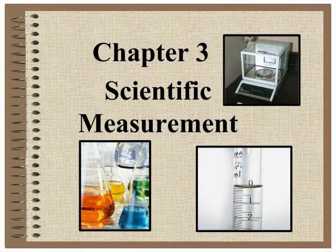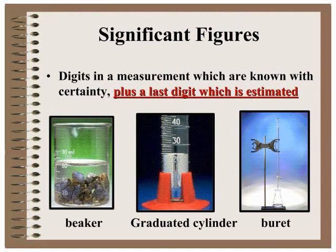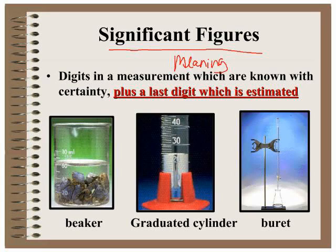We're going to continue with Chapter 3, our scientific measurement chapter. At this point you should feel comfortable with scientific notation and the rules of rounding. We're now going to head into significant figures, which is a topic you probably have very little background on. Significant figures are really the numbers that have meaning — all of the numbers you've measured, plus a last digit which has been estimated, either by you or by the piece of equipment. The better your equipment reads, the more significant figures you will be placing in that measurement.